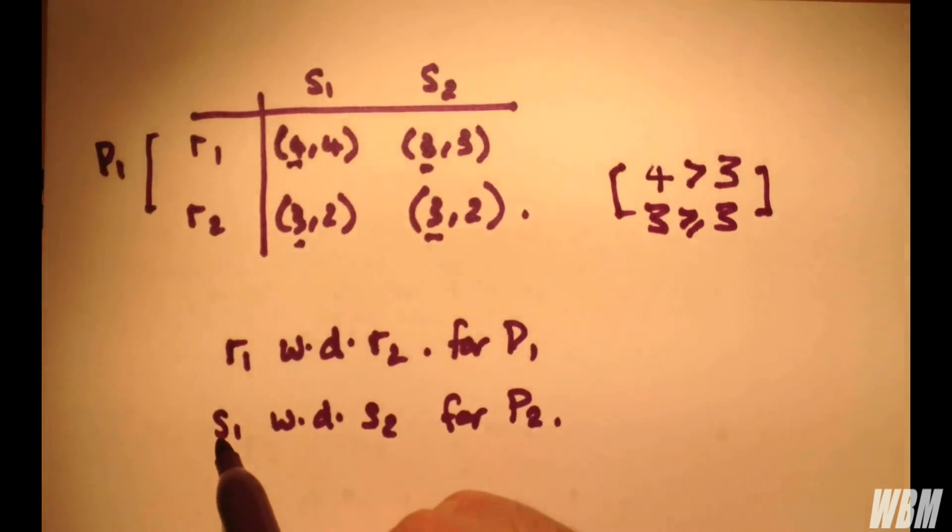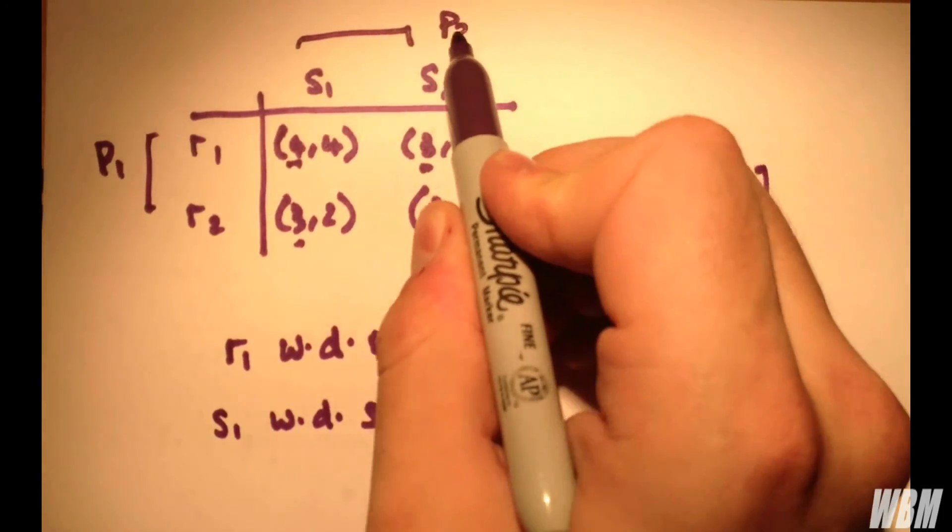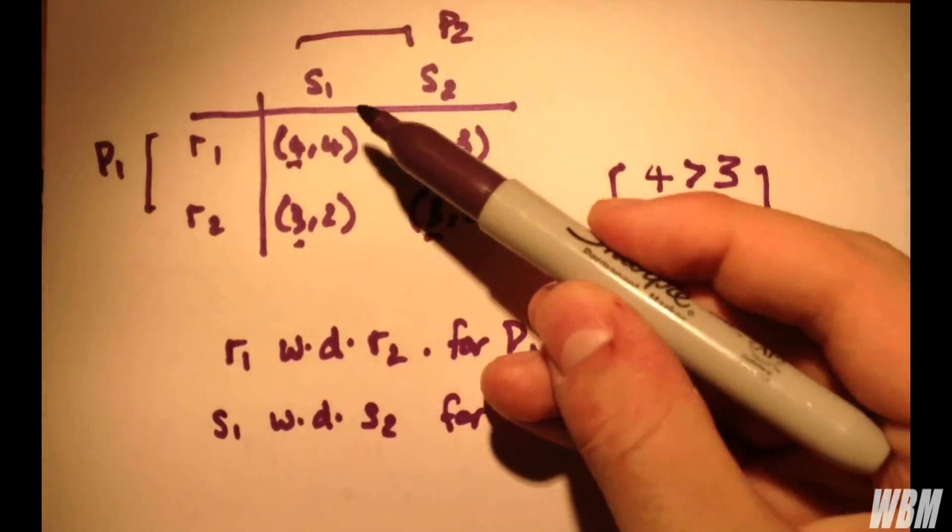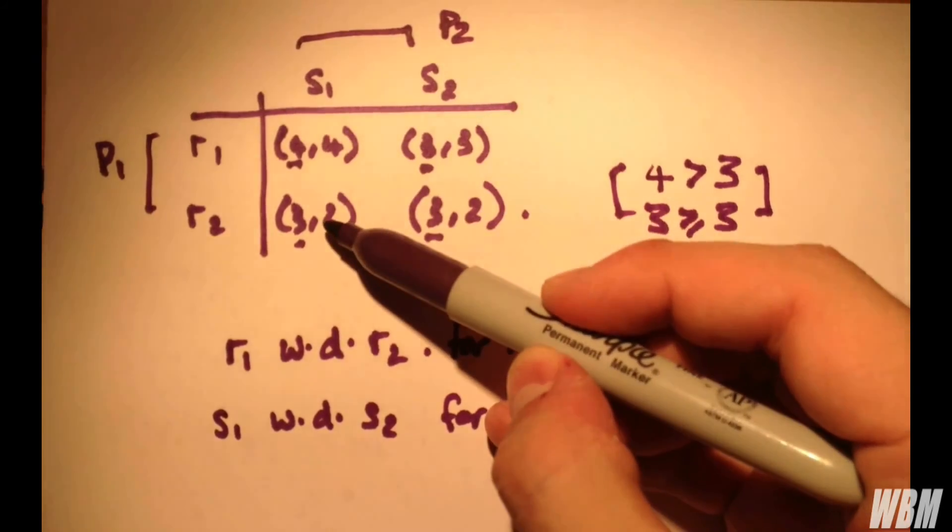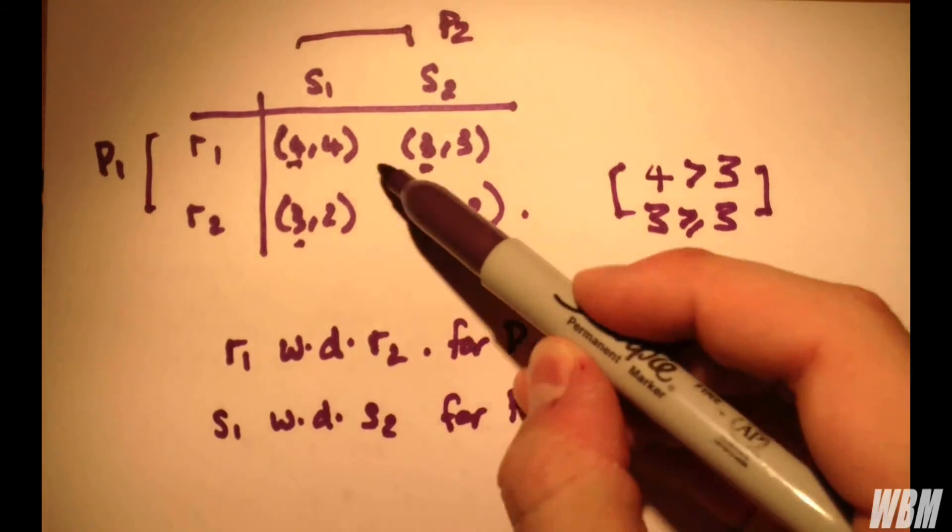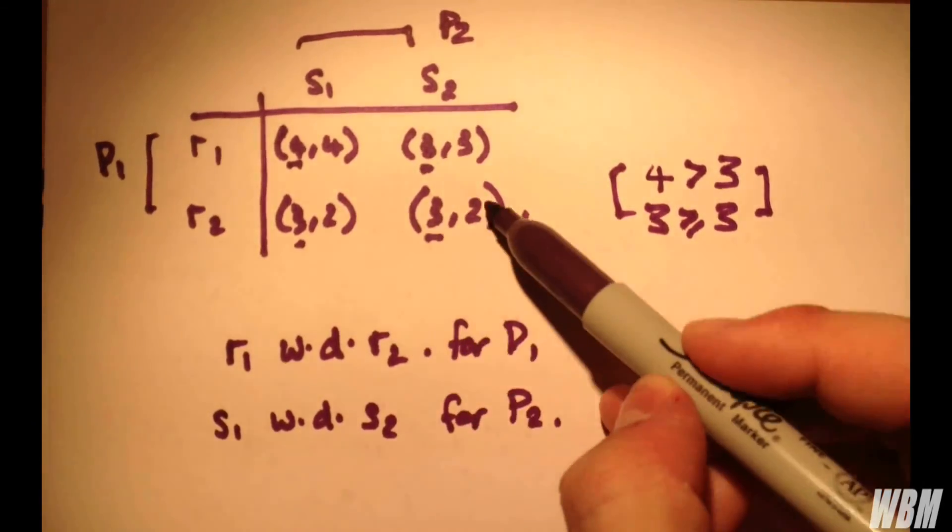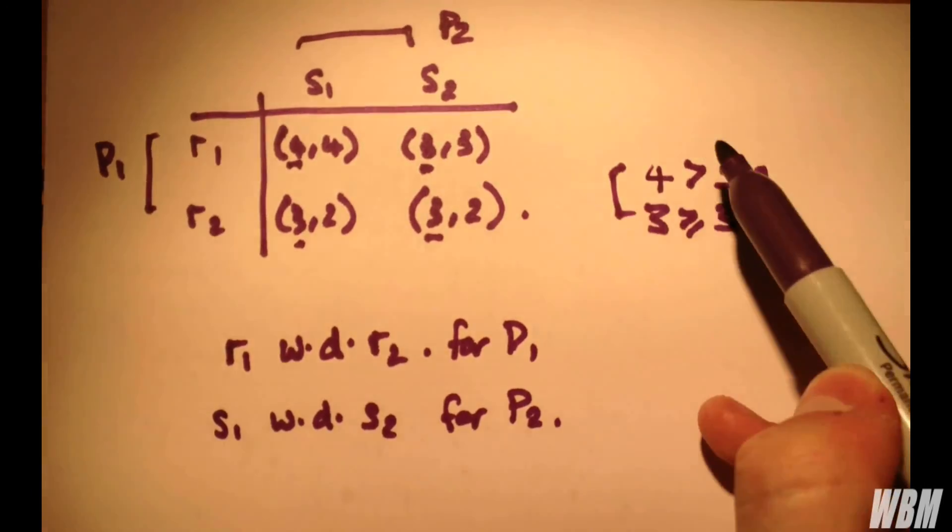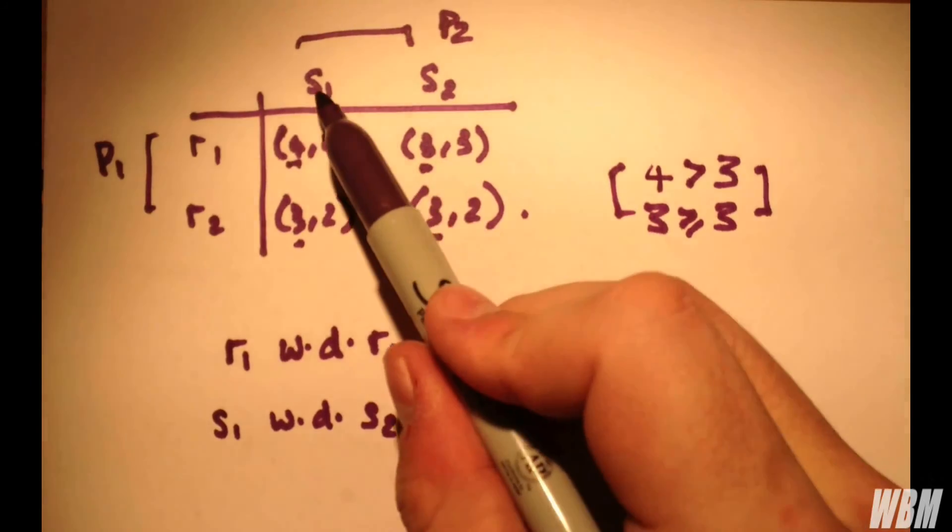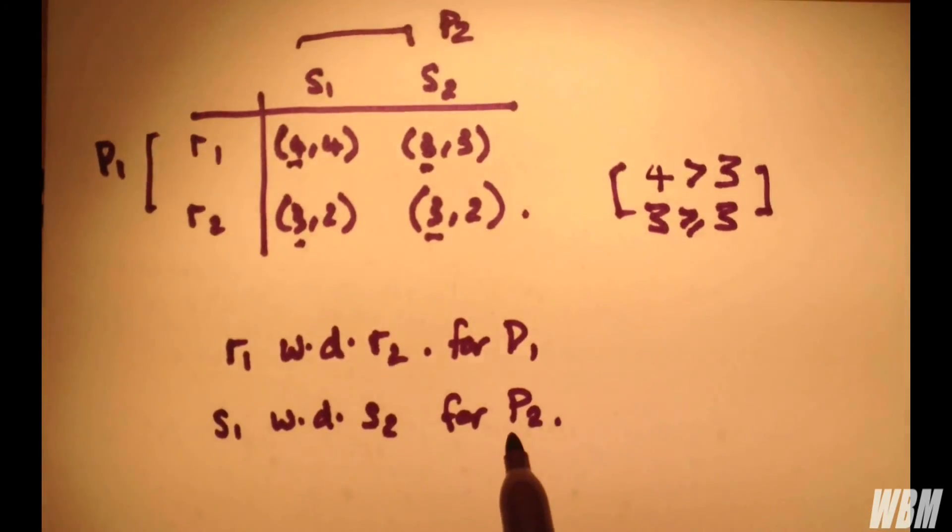Similarly, we're interested in player 2 up here. For strategy 1 of player 2, we have 4 and 2. At R1 here, 4 is greater than 3. And at R2, 2 is equal to 2. So we have a weak dominance for S1. So S1 weakly dominates S2 for player 2.